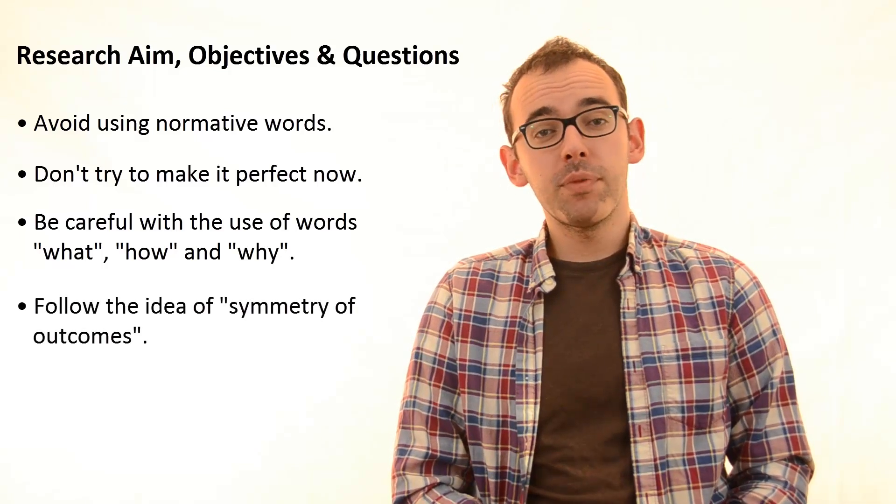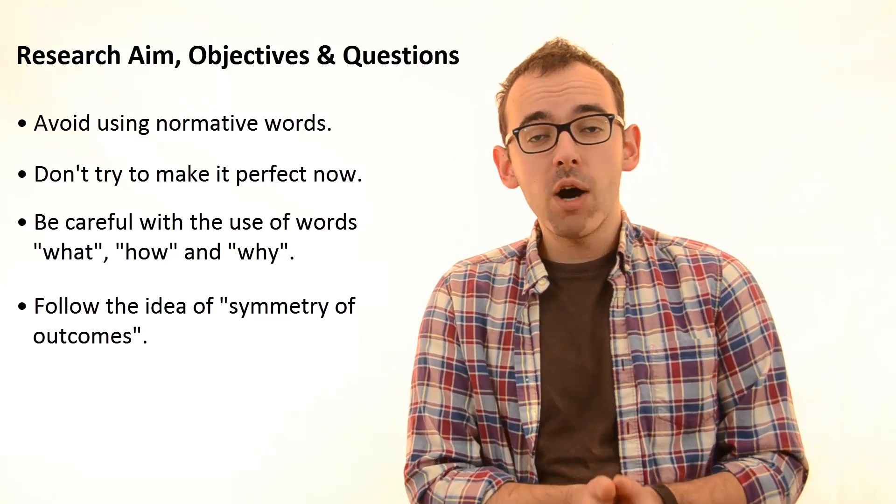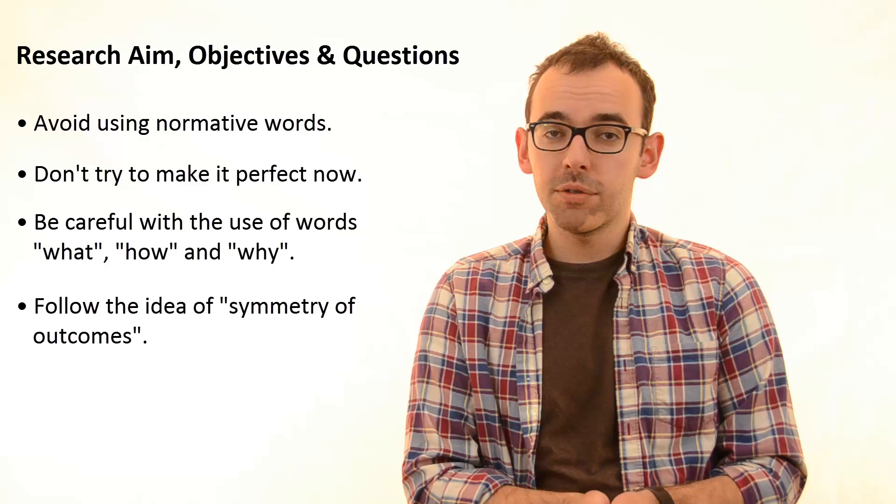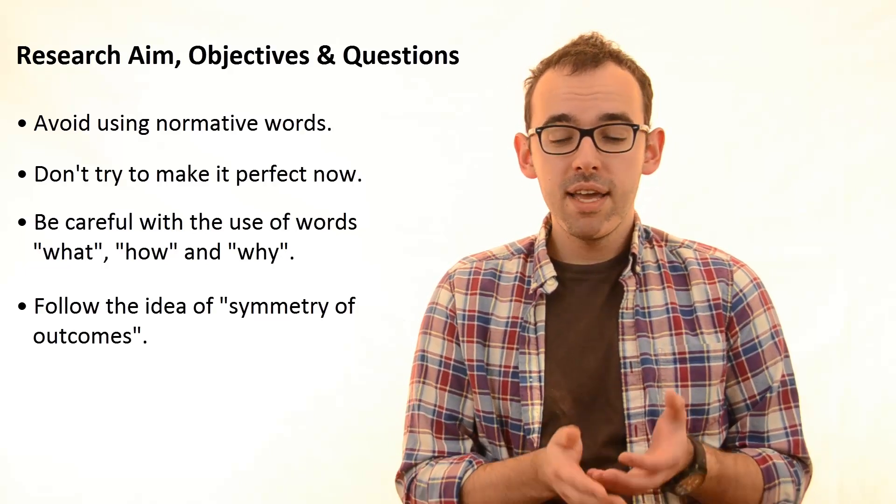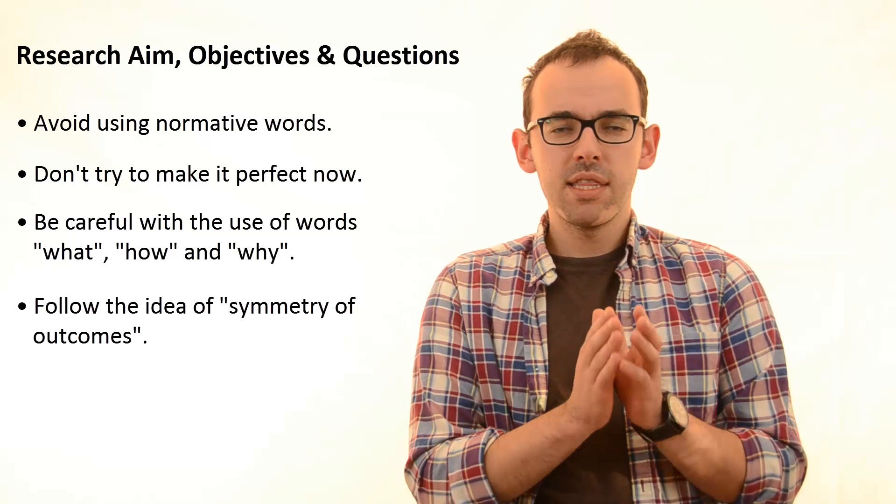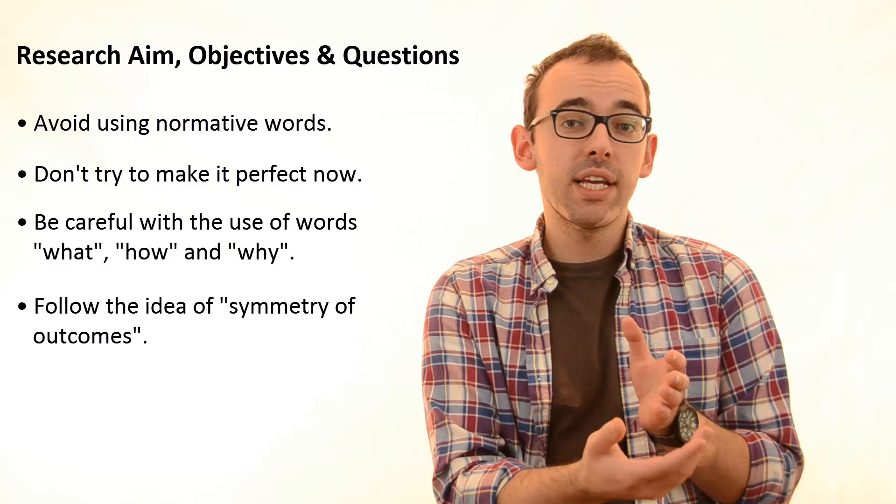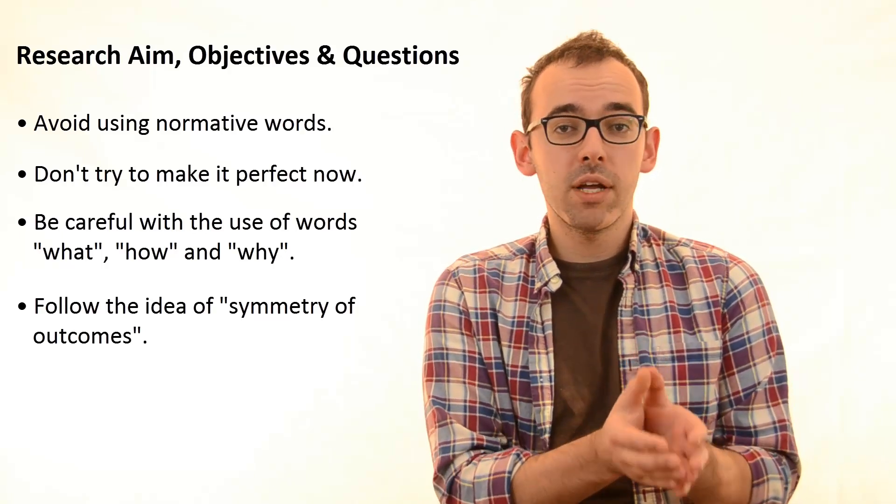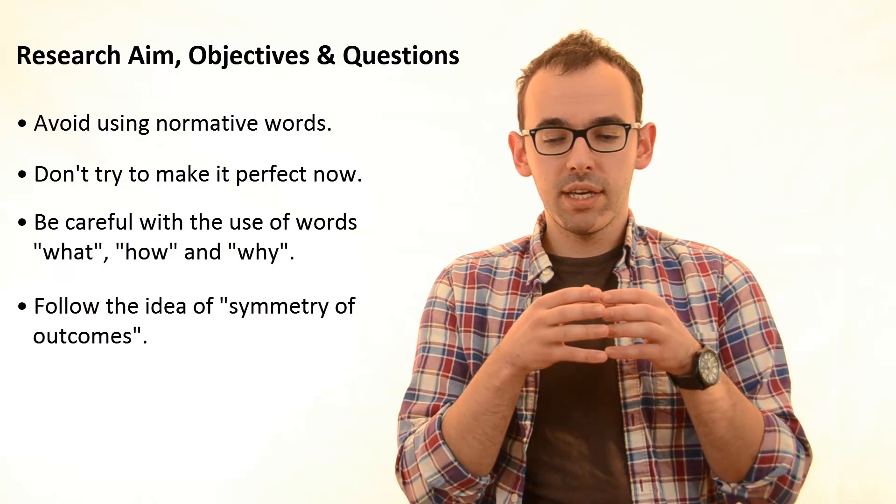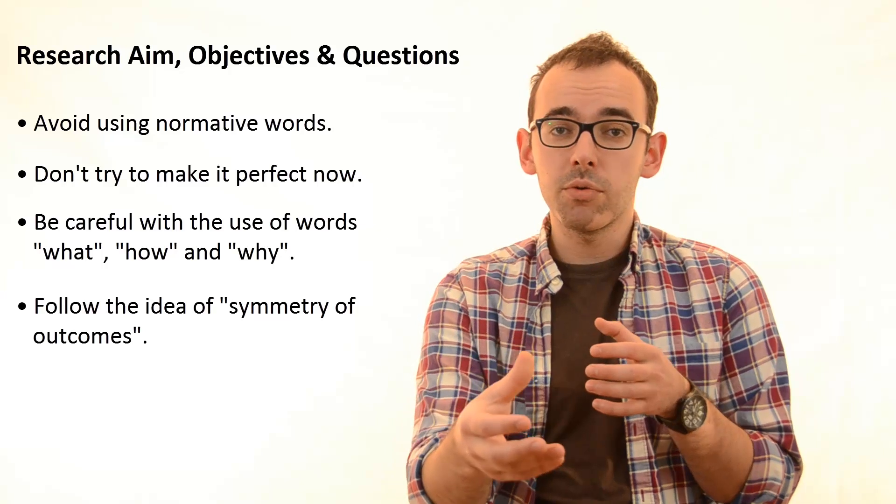Fourthly, your research aim should be stated in a way that what we call symmetry of outcomes will be achieved. This is a bit fancy phrase, but it's quite a simple idea. Symmetry of outcomes means that whatever the result of the analysis of your data collection will be, this outcome will be valuable.